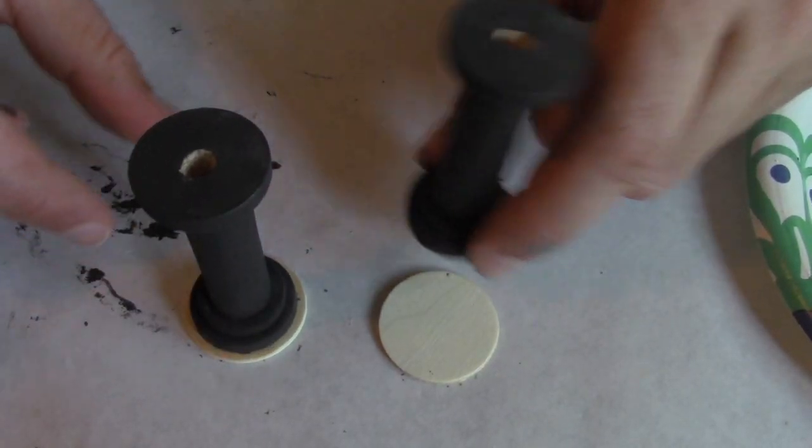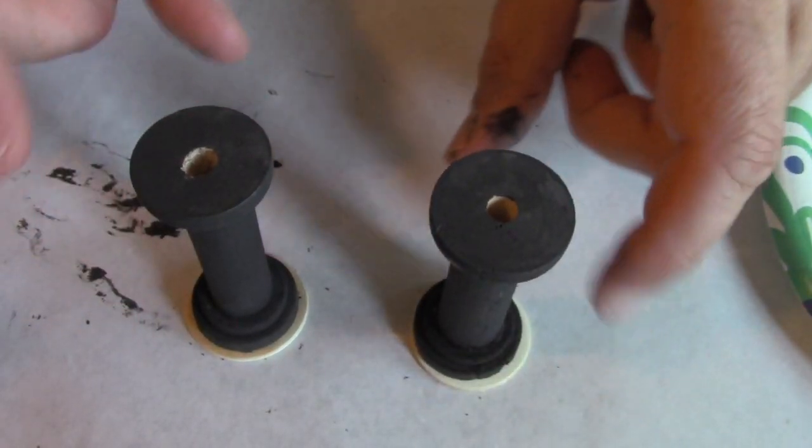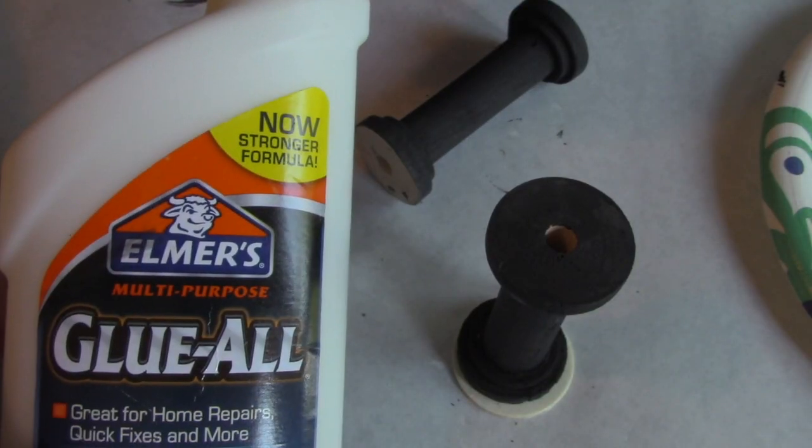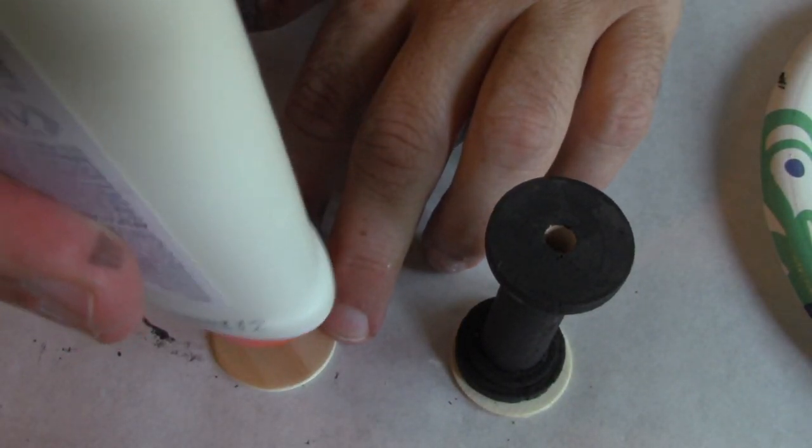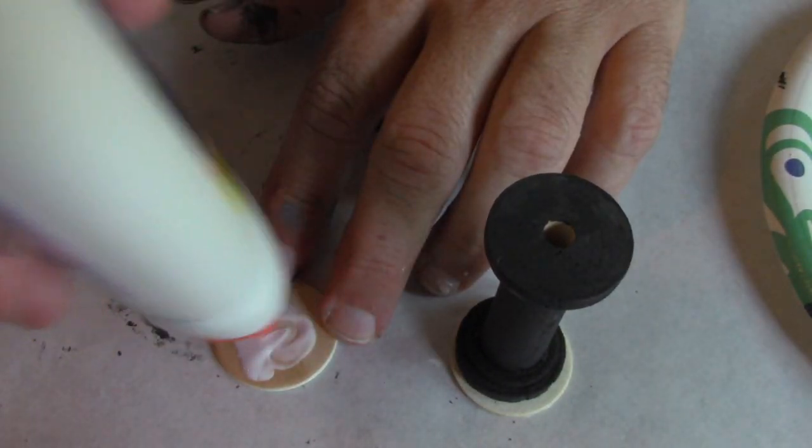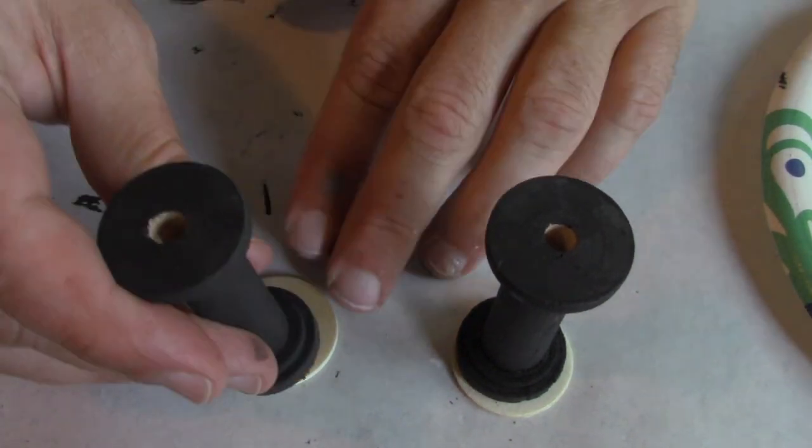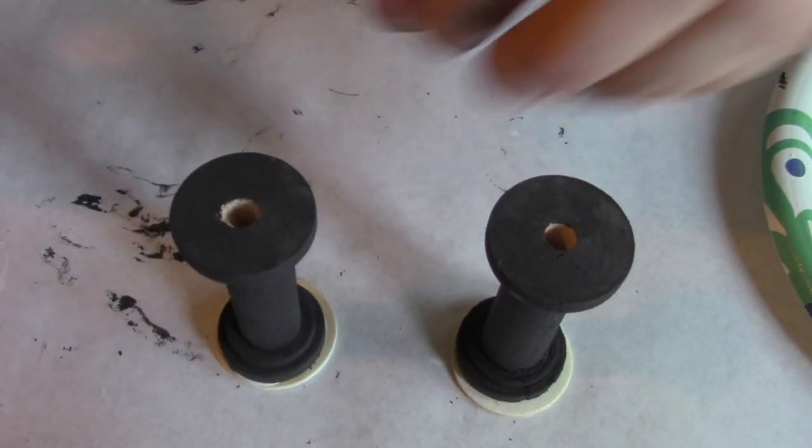I'm going to add a wooden disc on the bottom for extra stability because these are really light. I'm using regular Elmer's glue. If I had wood glue, that would be better. That would really be the thing for gluing wood on wood, but I just ran out.